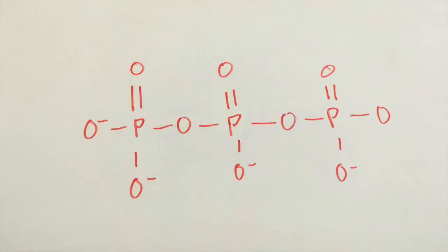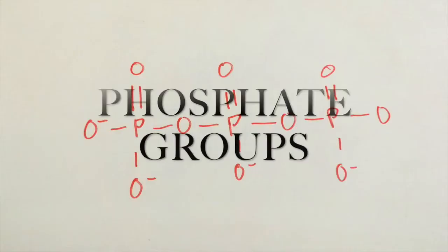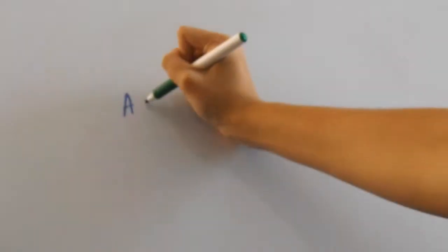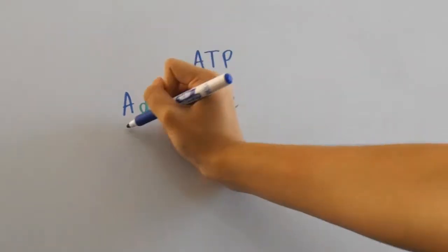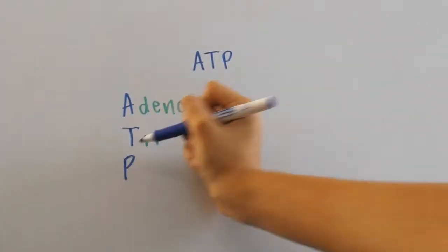The reason why ATP has so much energy is because of the three phosphate groups attached to it. ATP actually stands for adenosine triphosphate, with the tri meaning that there are three phosphate groups attached.